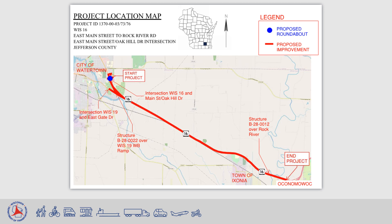The second project is a pavement replacement project which picks up where the intersection construction leaves off and continues to Rock River Road just west of Oconomowoc. The project will include the Wisconsin 19 entrance and exit ramps to the west, ending at the intersection of Wisconsin 19 and East Gate Drive.